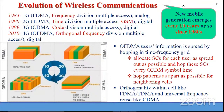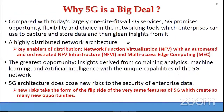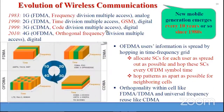Regarding the evolution of the cellular system, a new mobile generation emerges every 10 years or so since 1980. The first generation, based on frequency-division multiplexing, was analog. Each user is shown with a different color in the time-frequency diagram.